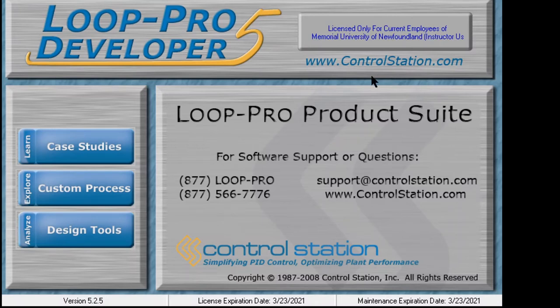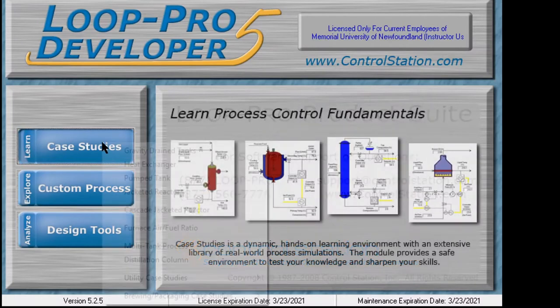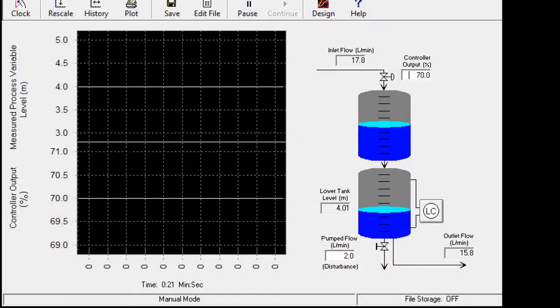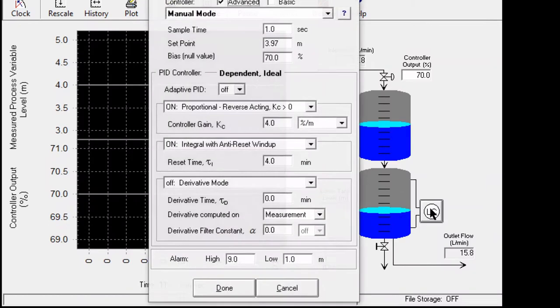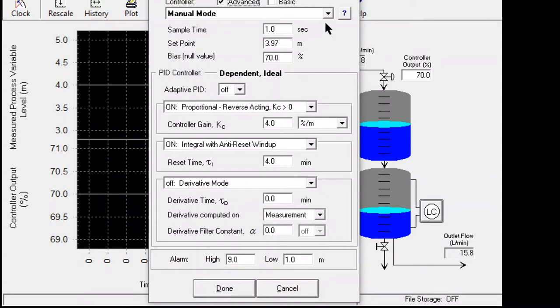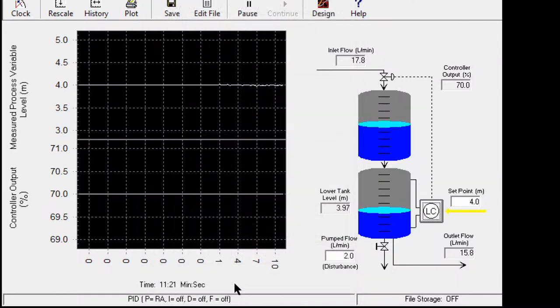Let's look at the continuous cycling method using the example of the gravity drain tank process. For this case, as the procedure suggests, we need to put the controller with a proportional only controller, meaning you turn off the integral mode and the derivative mode, and then make a small increase in the setpoint.